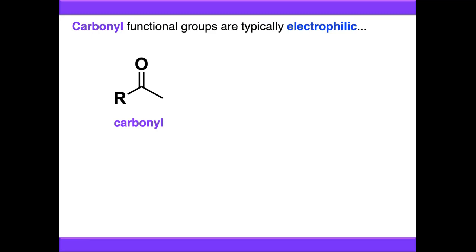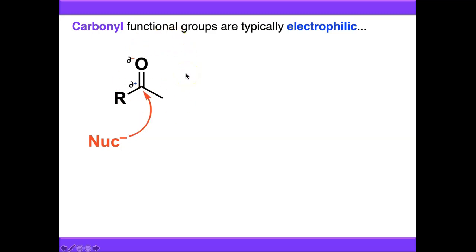We've seen that carbonyl compounds can behave as electrophiles and carbonyl functional groups themselves are typically electrophilic. So if we treat this carbonyl compound with a nucleophile, because of the polarisation of the bond, the nucleophile would attack carbon and we'd kick the electrons up onto oxygen to form a tetrahedral intermediate like this.